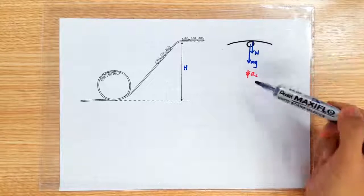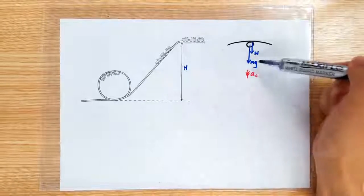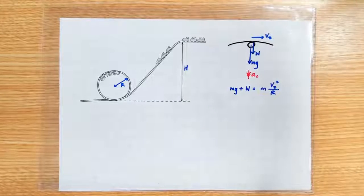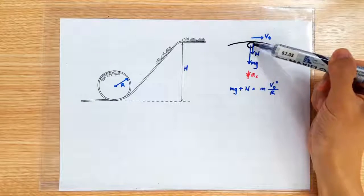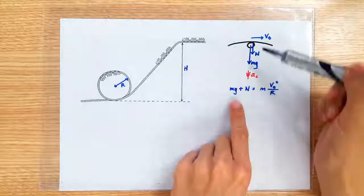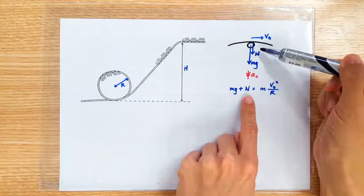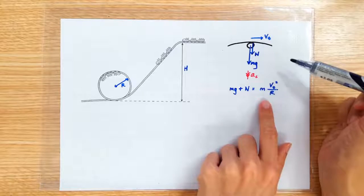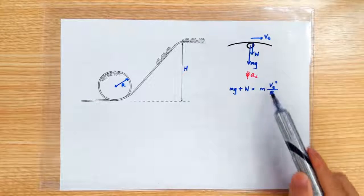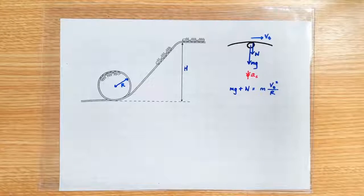So we apply Newton's second law on the roller coaster. The downward weight and the downward normal contact force provides the required centripetal force which we write as mv² over r.